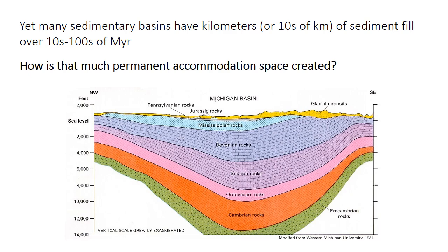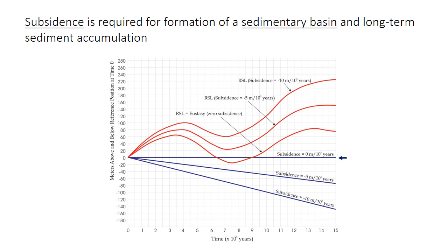Despite that, sedimentary basins contain sediment columns that are kilometers or even tens of kilometers thick, like here in the Michigan Basin. The sediment accumulated over tens or, in this case, hundreds of millions of years. So you can probably guess that sea level is not rising by thousands of meters over tens of millions of years. So how do we get the accommodation space to hold all this sediment? It's subsidence — the physical sinking of the Earth's crust — that's required to form a sedimentary basin where sediment can accumulate more or less permanently.